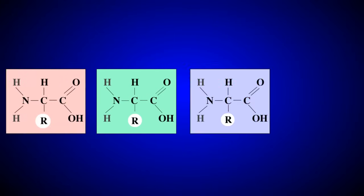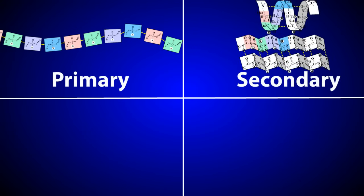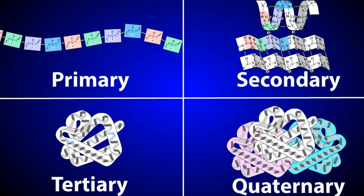Amino acids are linked together by peptide bonds forming long polypeptide chains. As these chains form, the polypeptide develops multiple levels of structure which contribute to its overall shape. These levels are called the primary, secondary, tertiary, and quaternary structures.